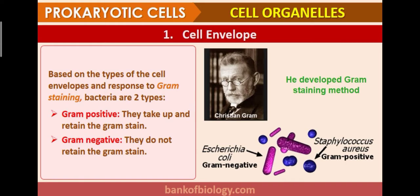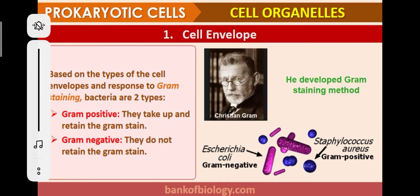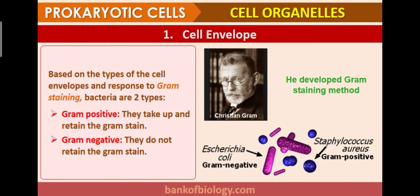Based on the type of cell envelopes and response to gram staining, bacteria are of two types: gram-positive and gram-negative. Christian Gram developed the gram staining method. Bacteria that appear red or pink in color are gram-negative, while bacteria that appear dark blue in color are gram-positive — examples include Staphylococcus, Streptococcus, and E. coli.